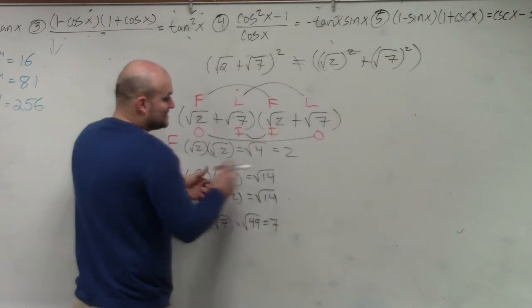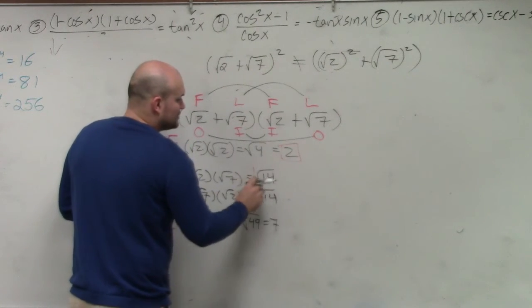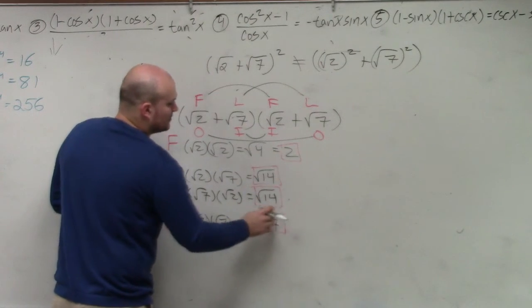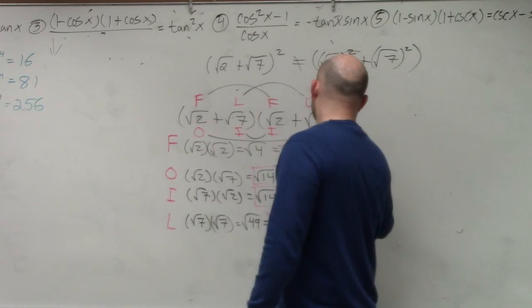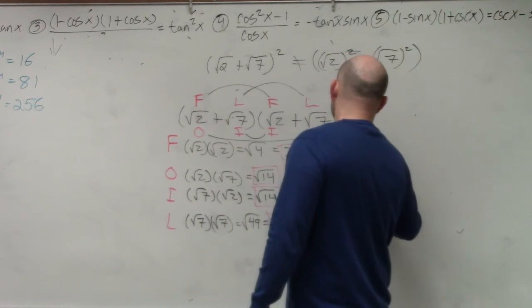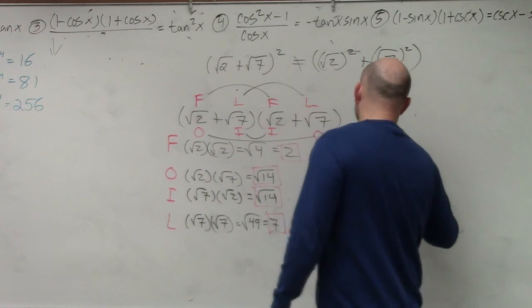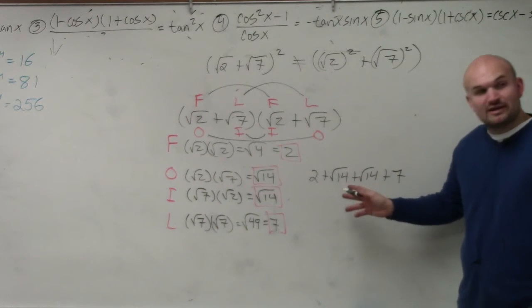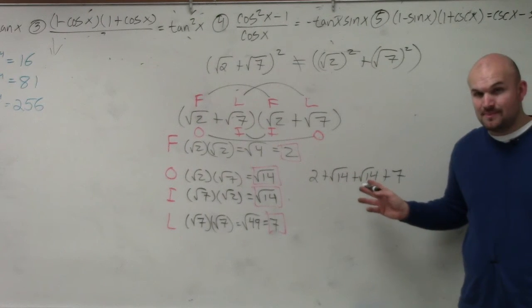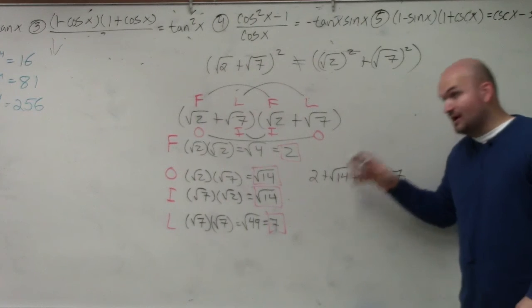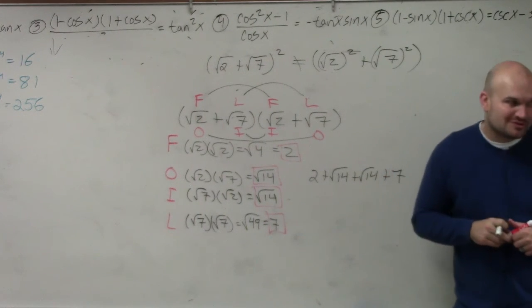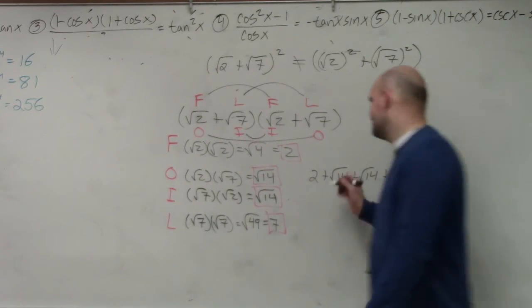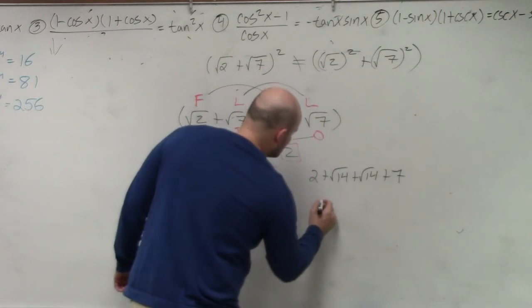Now we have the answer for each product of FOIL. Now we just need to write them all out to combine. So I have 2 plus the square root of 14 plus the square root of 14 plus 7. Is the index and the radicand exactly the same? Yes. So if you have 1 square root of 14 plus another 1 square root of 14, how many square roots of 14s do you have? Two. And then 2 plus 7 is 9.